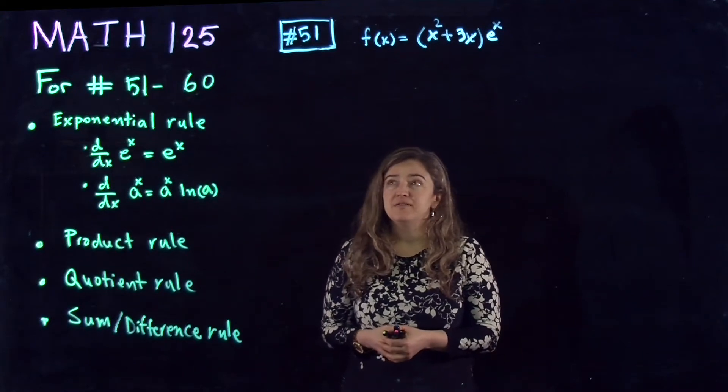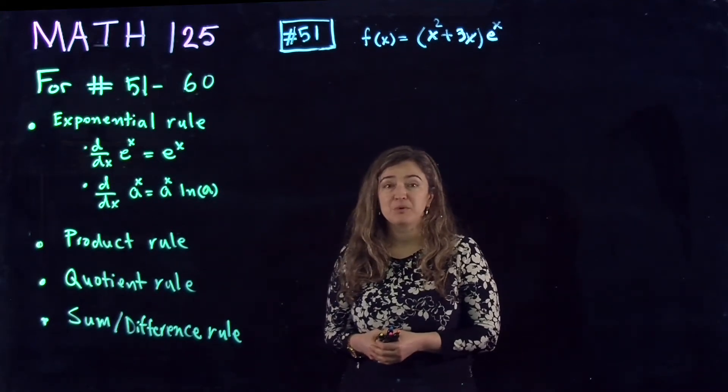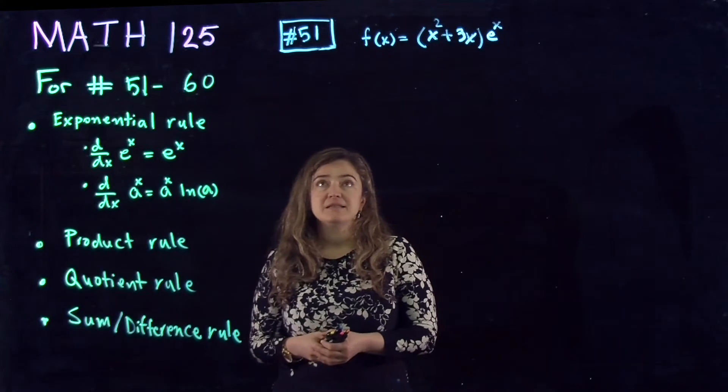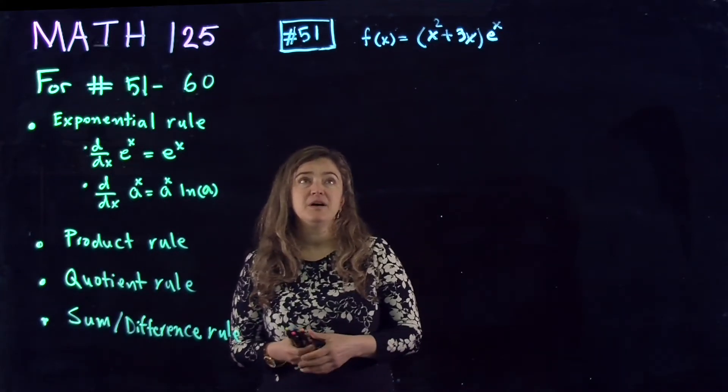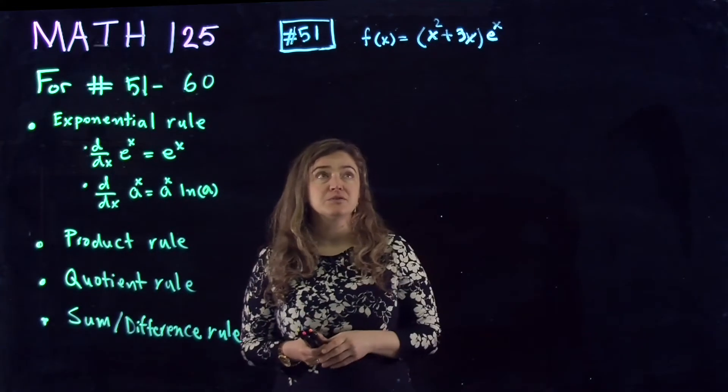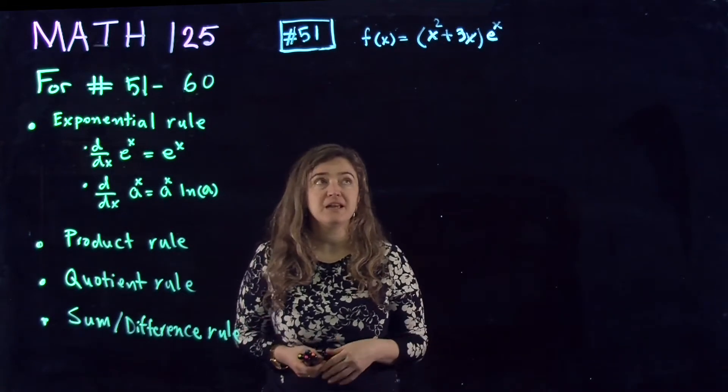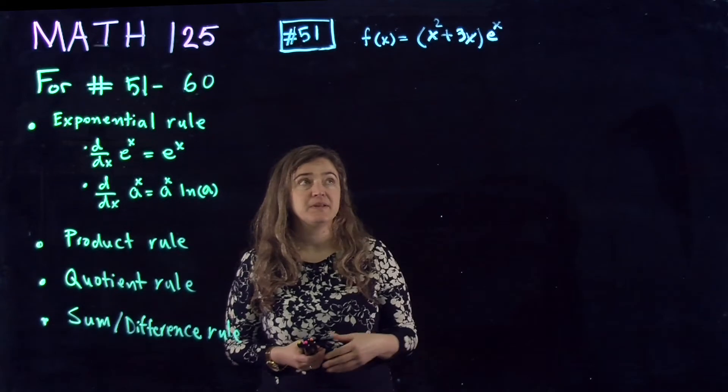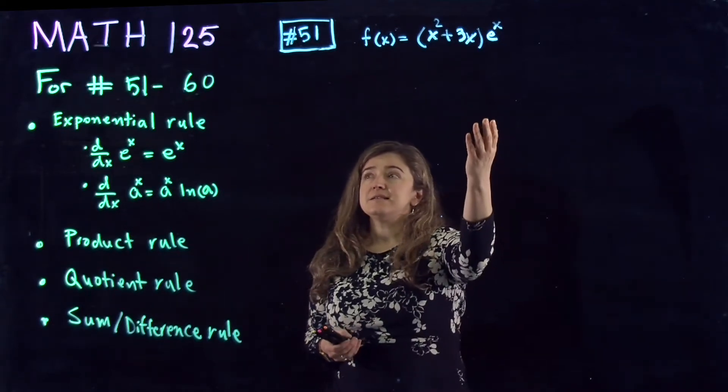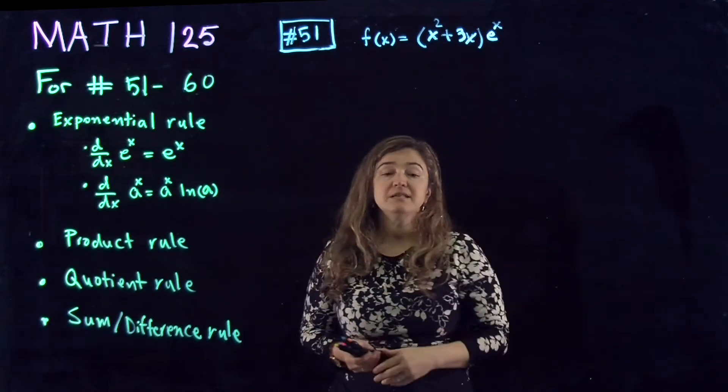Hello, we're continuing with solving gateway questions for Math 125, this time problem number 51, which is f of x equal to x squared plus 3x times e to the x.